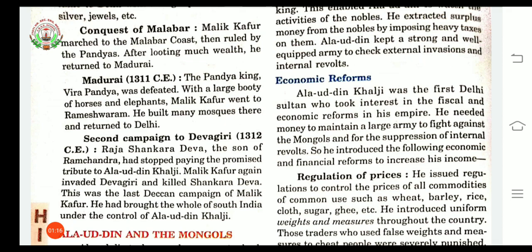Alauddin Khalji was the first Delhi sultan who took interest in fiscal reforms. Fiscal means relating to the income received by a government, especially from tax. As you know, Alauddin Khalji had a very large army. He used that army to fight against the Mongols, so he needed a lot of money to maintain his army and to suppress — meaning to prevent — internal revolts. Because of these two reasons, he introduced various economic and financial reforms.